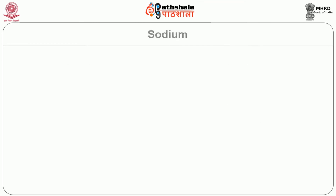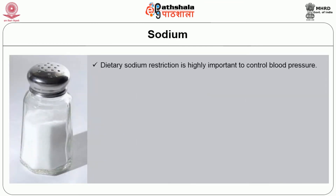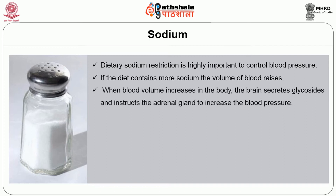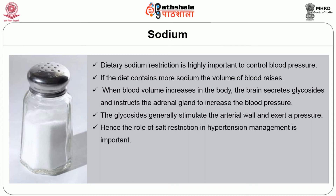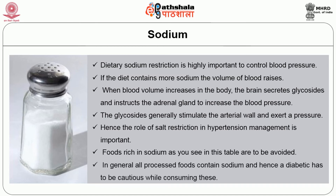The next important nutrient is sodium. Dietary sodium restriction is highly important to control blood pressure. If the diet contains more sodium, the volume of blood raises. When blood volume increases, the brain secretes glycosides and instructs the adrenal gland to increase blood pressure. The glycosides stimulate the arterial wall and exert pressure. Hence the role of salt restriction in hypertension management is important. All processed foods contain sodium, and hence a diabetic has to be cautious while consuming them.